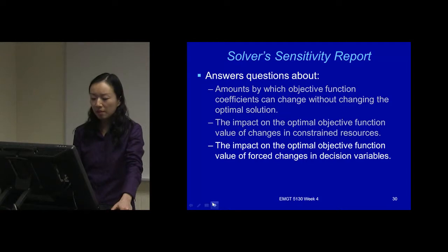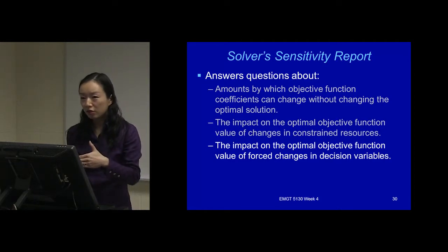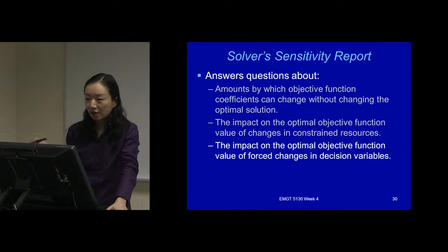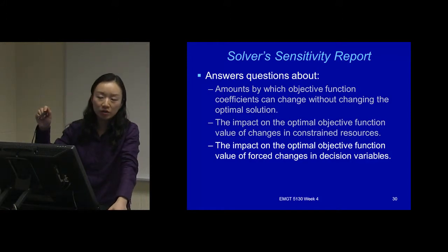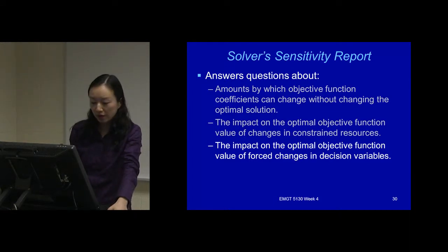The third thing is the impact on the optimal objective function value of forced changes in the decision variable. In this case, for example, we implement this Typhoon Lagoon in the server, and we know that it's going to be zero in the optimal solution — the x3 value will be zero.